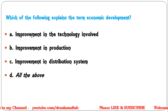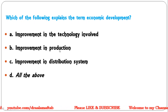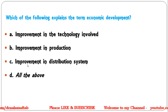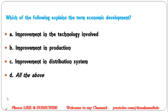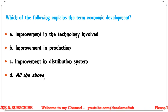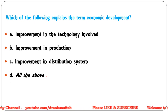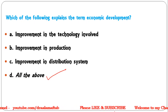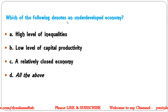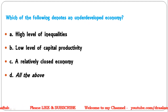Let us begin with the questions. Which of the following explains the term 'economic development'? A) Improvement in the technology involved, B) Improvement in production, C) Improvement in distribution system, D) All of the above. The correct answer is D — all of the above.